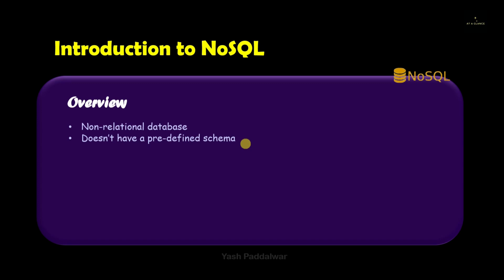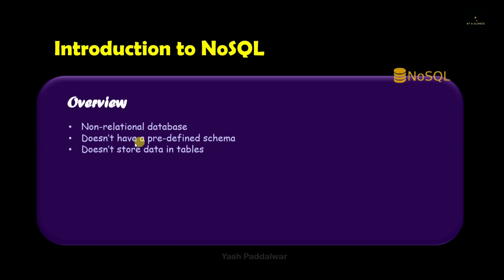In one of the previous videos when we discussed the different types of big data, I showed you how data is stored in a structured database — we use tables which contain columns as well as rows. But this is not the case for NoSQL. Inside NoSQL we do not use tables for storing data. We will be discussing the different ways to store unstructured data in the next videos.